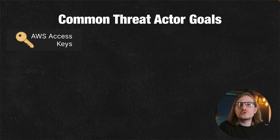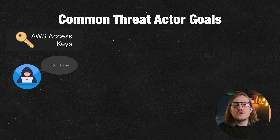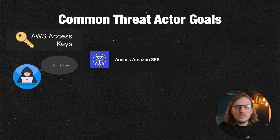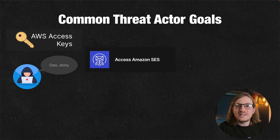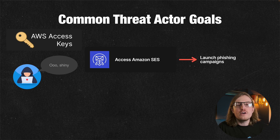Commonly, when a threat actor gains access to AWS credentials, they'll do a few things depending on their objectives. For example, they may try to access Amazon SES, or Simple Email Service, to try and send spam and phishing campaigns from the organization's email domains.